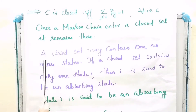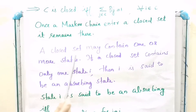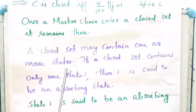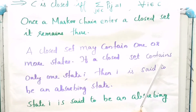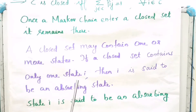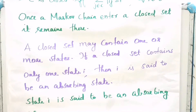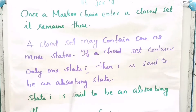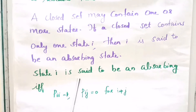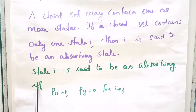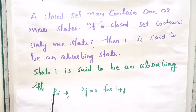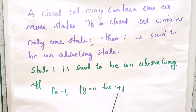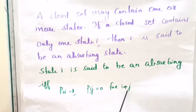A closed set may contain one or more states. If a closed set contains only one state i, then i is said to be an absorbing state. State i is said to be absorbing if and only if P_ii equals 1 and P_ij equals 0 for i not equal to j.